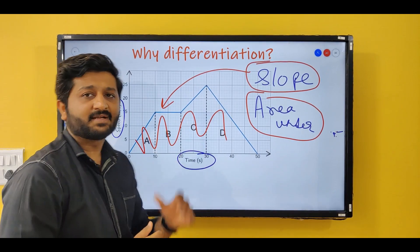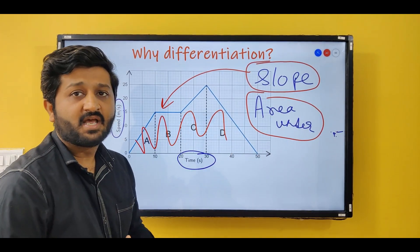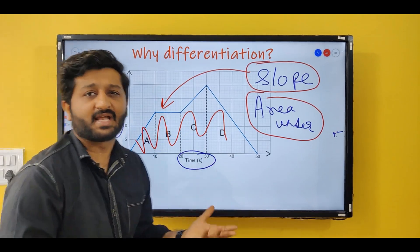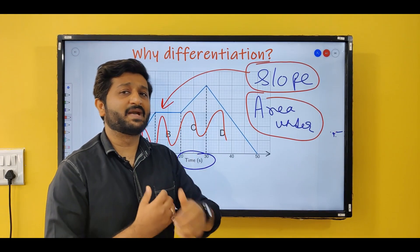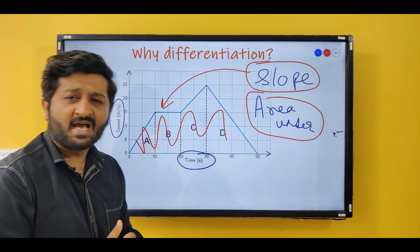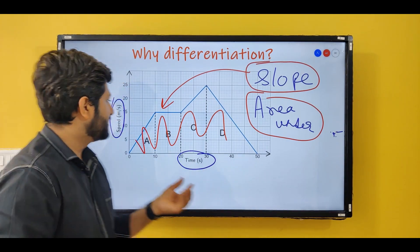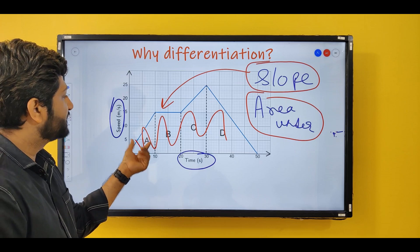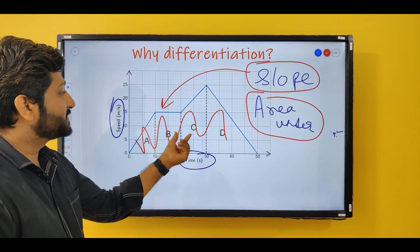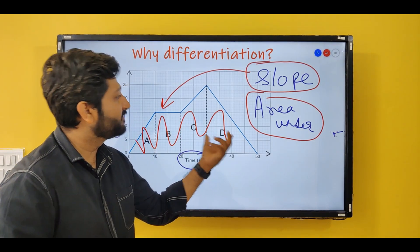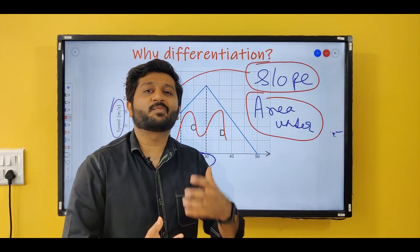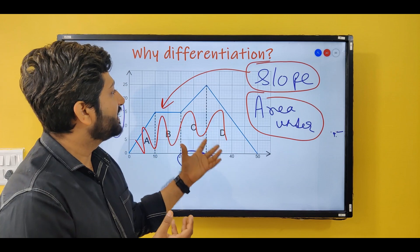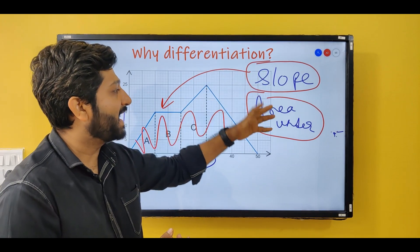As you can see, this graph consists of straight lines, so finding the slope is pretty easy and finding the area is also easy. Shape A is a triangle, shape B is a rectangle, shape C forms a trapezium, and shape D forms a triangle. We know the formula for all these shapes, so it is pretty easy to find the slope and area under this kind of graph.